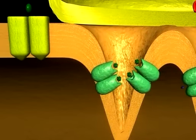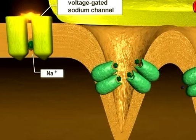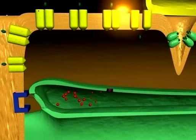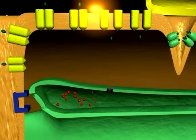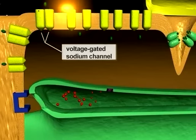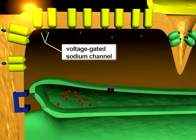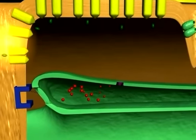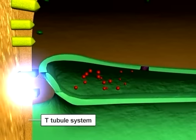The initial flux of ions due to opening of the channels brings the membrane potential to threshold, causing the voltage-gated sodium channels in the vicinity to open. The resulting action potential is propagated over the entire surface of the muscle and also courses into the T-tubule system.